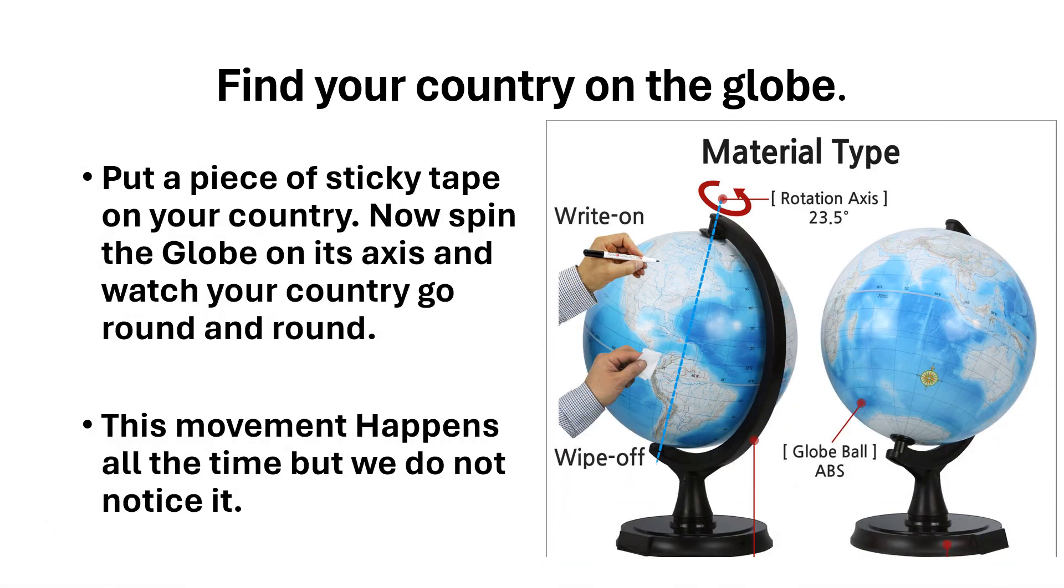Find your country on the globe. Put a piece of sticky tape on your country. Now spin the globe on its axis and watch your country go round and round. This movement happens all the time but we do not notice it.